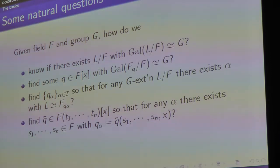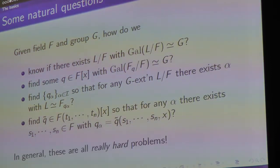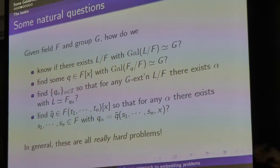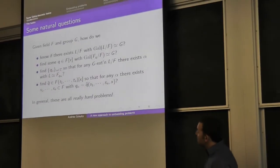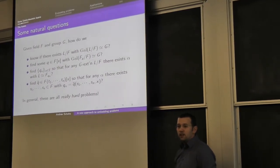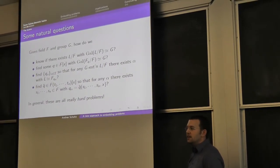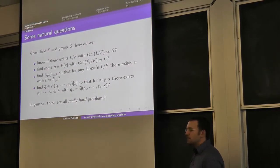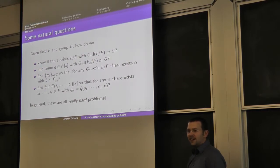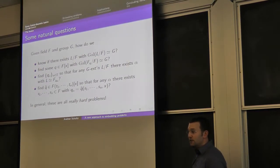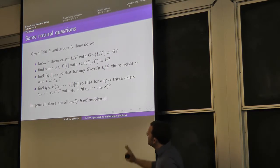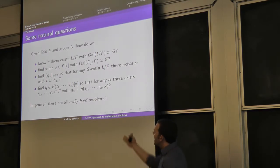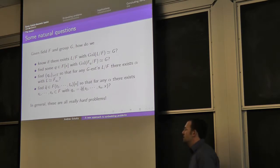Finally, if you're not satisfied with knowing the full family, you might ask: is there some generic polynomial Q̃, now in the polynomial ring over F with adjoined variables T₁ through Tₙ, so that any polynomial Qα in the family is realized by specializing Q̃ at a few places? This Q̃ is called the generic polynomial for the group. There's actually a book called Generic Polynomials that captures a lot of this information.